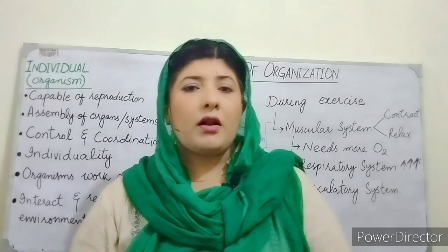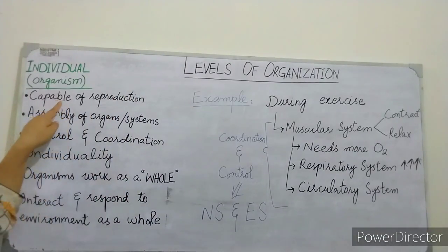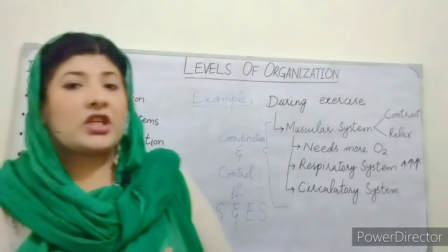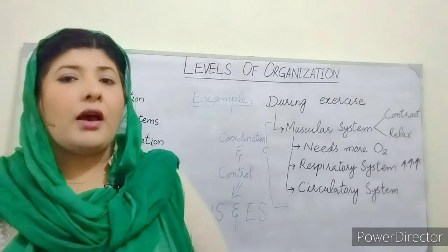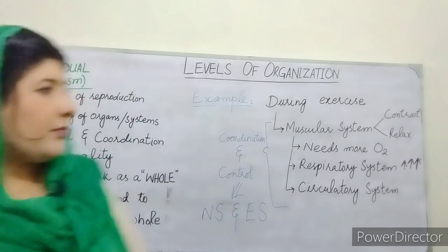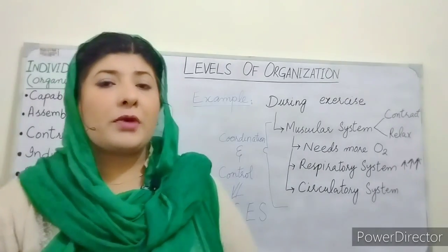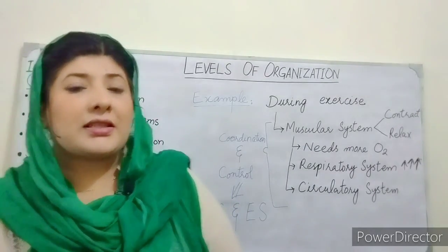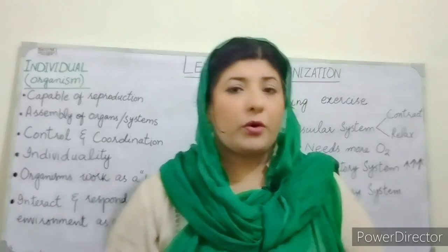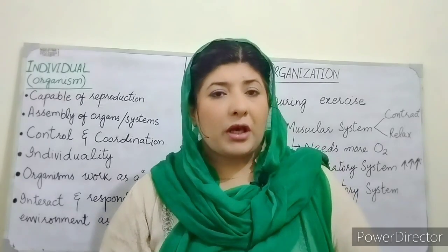Individual or an organism — to talk about reproduction, they are capable of reproduction. They can produce various kinds of offspring. They are the assembly of organs and organ systems, and the whole organs are working together in a comprehensive system.